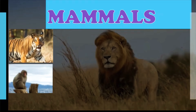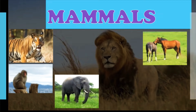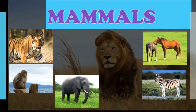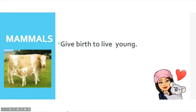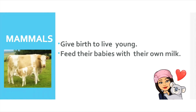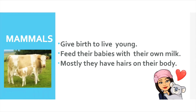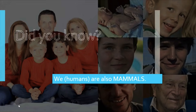The next type is mammals. The lion, tiger, monkey, elephant, horse, and zebra are all mammals. Mammals are animals which give birth to live babies. They feed their babies with their own milk, and mostly they have hair on their body. Did you know we humans are also mammals?